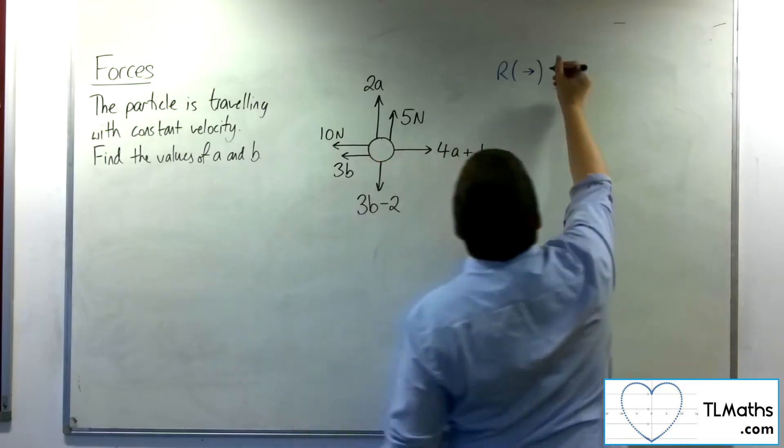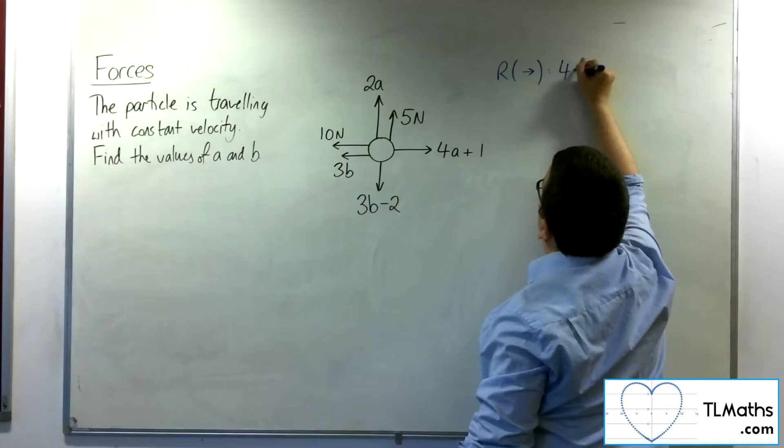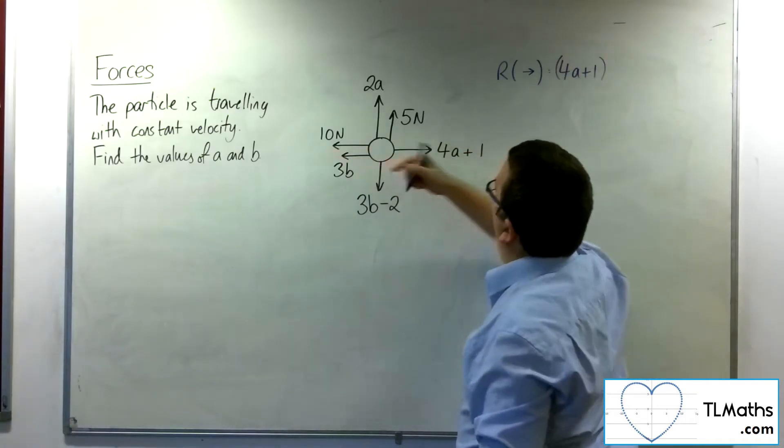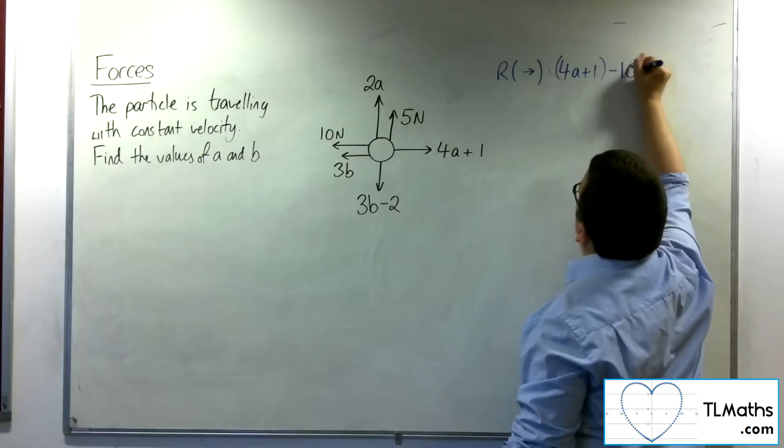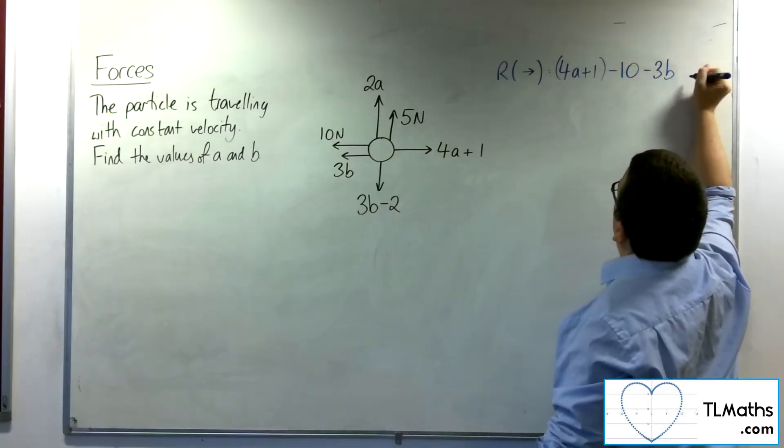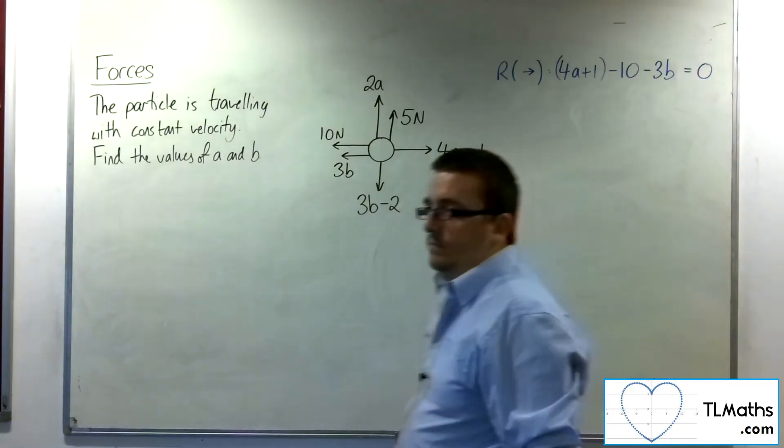And I've got 4A plus 1 working in the positive direction. Then I've got 10 newtons working against me. And I've got 3B working against me. And it's all in equilibrium, and so this must be zero.